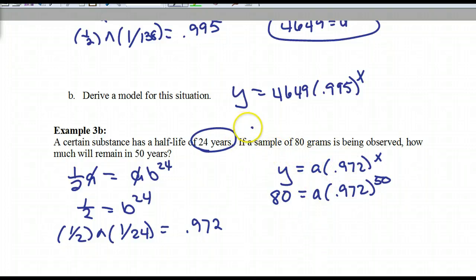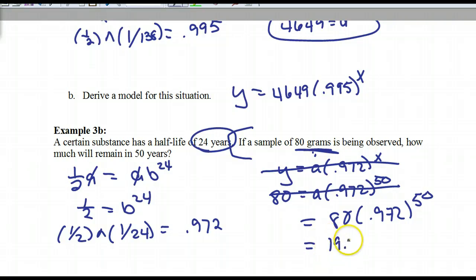You guys, one thing I just re-read this. It says, if a sample of 80 grams today is being observed, how much will remain after 50? So, actually, it should have been 80 times this to the 50th. So 80 is the original? Yeah. Because it's saying if you're starting today. 80 grams being observed today. It's going to be 80 because we're talking about from now to the future. 80 is how much the original is, and today it's 80.